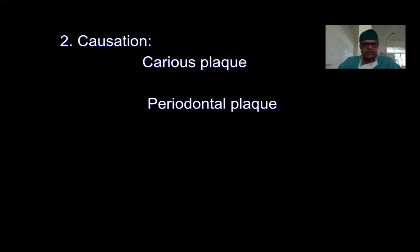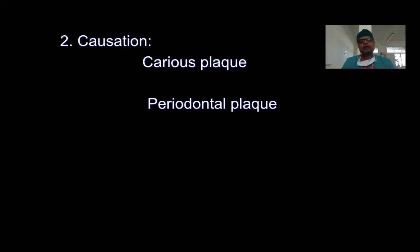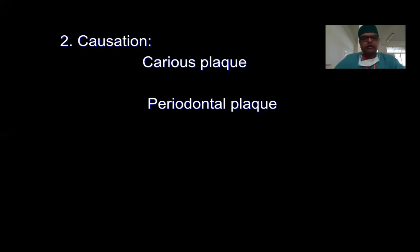The second classification is by causation — what disease does the plaque cause. It can be classified as caries plaque and periodontal plaque. Most supragingival plaque is caries plaque — the bacteria in it cause dental caries. Periodontal plaque initiates periodontal disease, ranging from simple gingivitis to very aggressive forms of aggressive periodontitis.